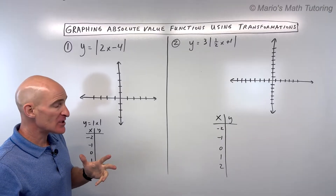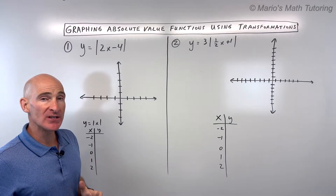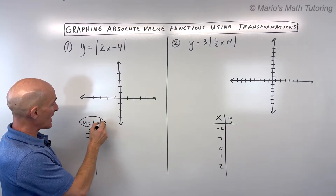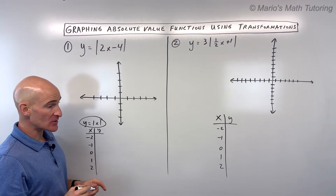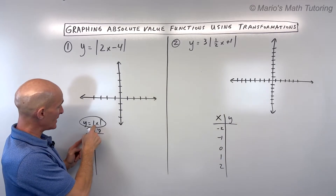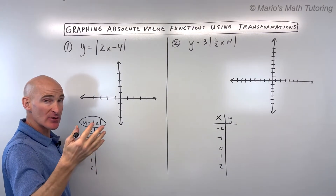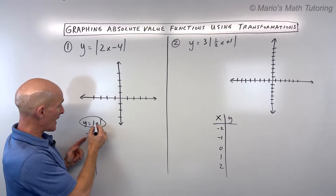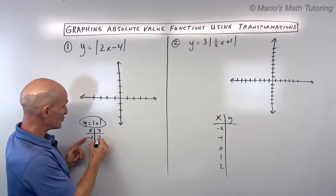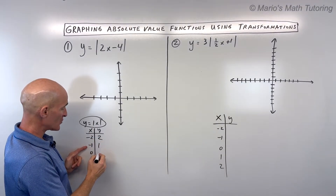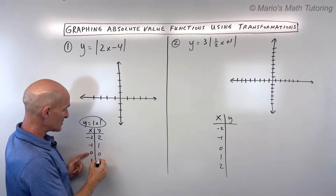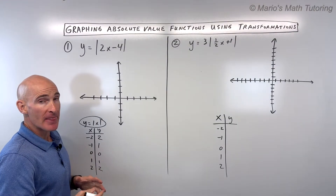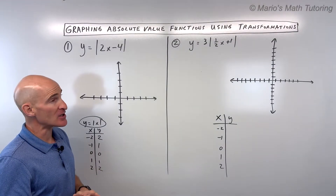The first thing you want to do is look at the parent function: y equals the absolute value of x. Whatever we put in, when we take the absolute value, it always makes it positive. So the absolute value of negative 2 is 2, absolute value of negative 1 is 1, then 0, 1, and 2. Always positive — that's our parent function.